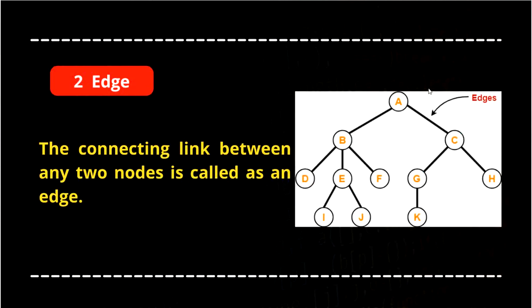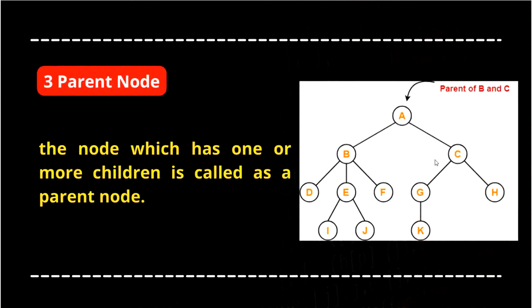The next terminology is edge. The connecting link between any two nodes is called an edge. The connecting link between A and B is this line, so this line is known as an edge. Similarly, the connecting link between A and C is also an edge. The link connecting C and G is also known as an edge.